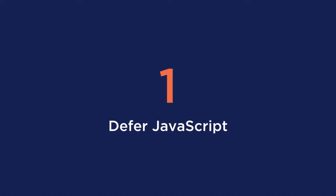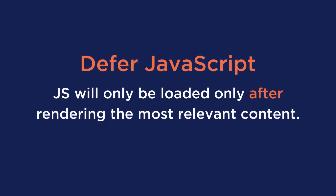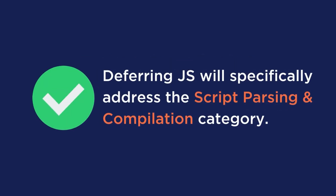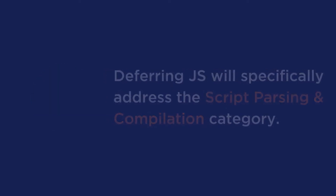Now that you know how this works and how it can impact your website, here are five ways to minimize the main thread on your WordPress website. The first option is to defer JavaScript files. By deferring the parsing of the JavaScript files, they will only be loaded after rendering the most relevant content. Deferring JavaScript will specifically address the script parsing and compilation category.